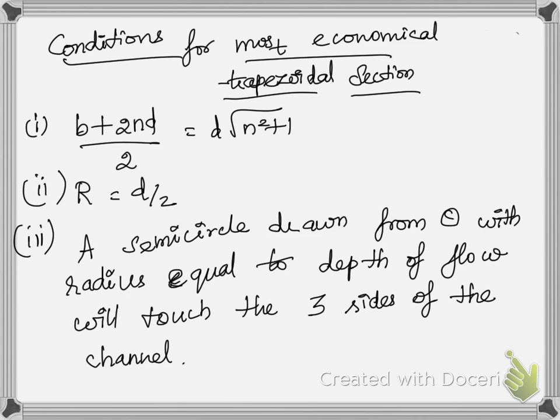Since OF = D (the depth of flow), if a semicircle is drawn with center O and radius equal to the depth of flow, it will be tangential to the three sides of the trapezoidal channel. These are the three conditions for the most economical trapezoidal section. Thank you and happy learning.